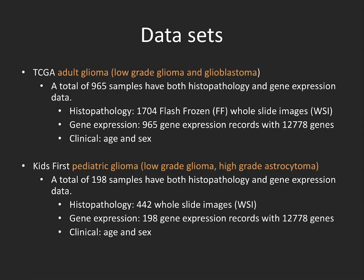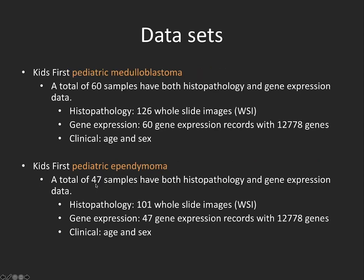Here is the data used. We started with Cancer Genome Atlas data from adult gliomas — about 1,000 samples — with clinical data, gene expression data, and histopathology data. Secondly, we used pediatric glioma data from the Kids First project, with the same data modalities but only about 200 patients. We also used data from two other pediatric brain tumor types: medulloblastoma and ependymoma, with 60 medulloblastoma patients and 47 pediatric ependymoma patients. The reason for including these datasets is to test transfer learning in the multimodal context.